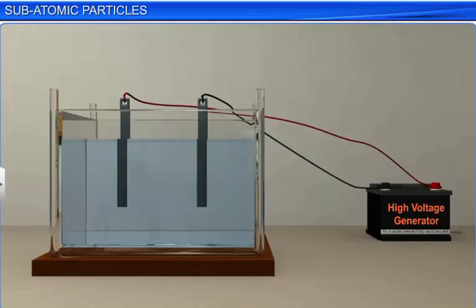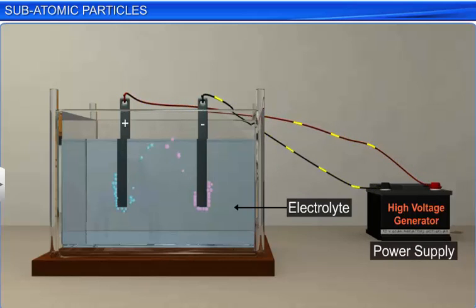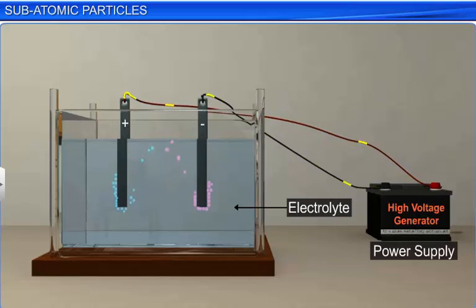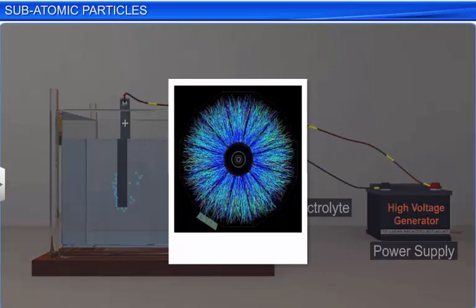Michael Faraday found that when electricity is passed through an electrolyte — which is a solution that conducts electricity — chemical reactions resulting in the deposition of matter at the electrodes take place. This experiment proved that electricity consists of charged particles, which in turn indicated the electric nature of matter.